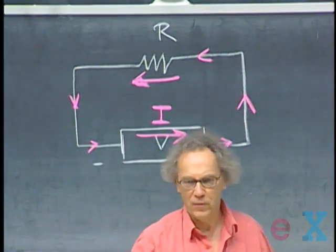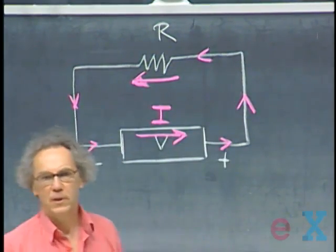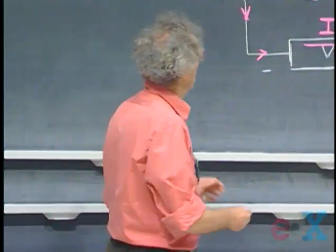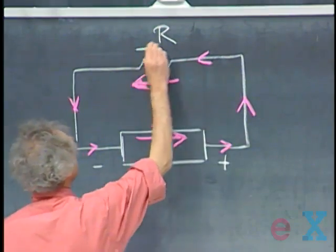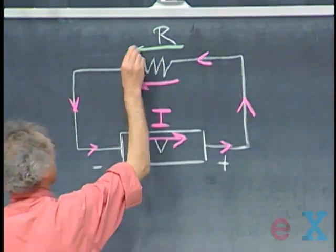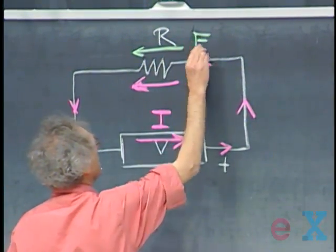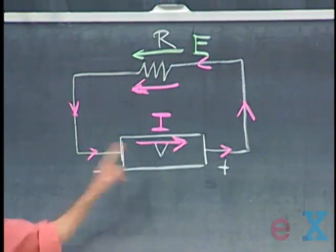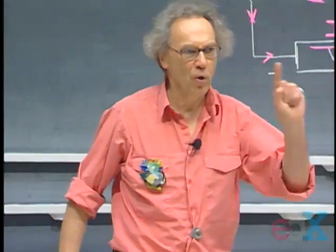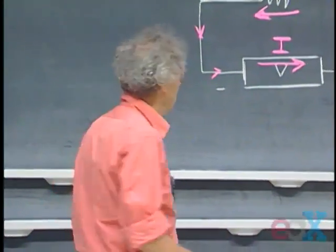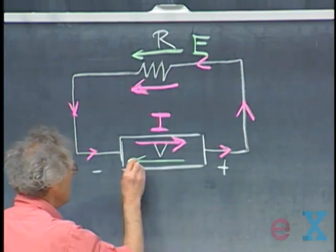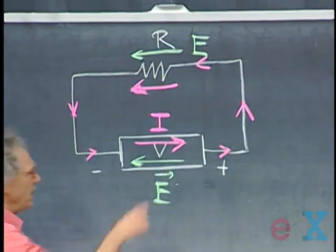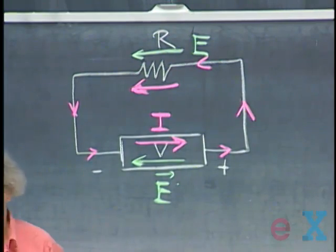In what direction is the electric field? The electric field always runs from plus to minus potential. So right here in this resistor the electric field is in this direction, from plus to minus. But inside the supply it must also go from plus to minus. And so inside the supply, the electric field is in the direction that opposes the current.